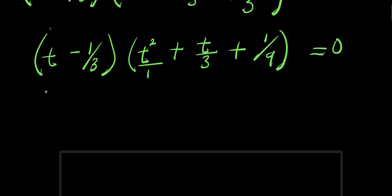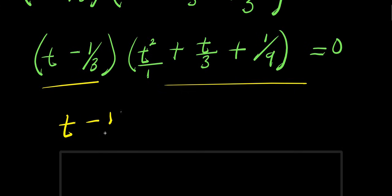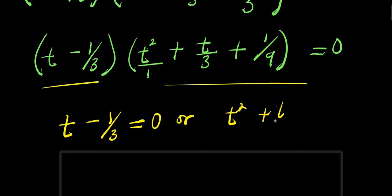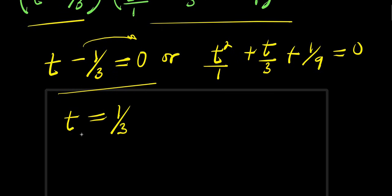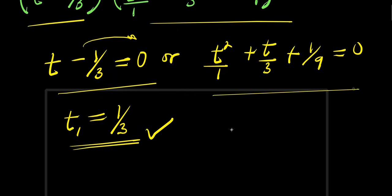So to solve this equation: t minus 1 over 3 equals 0, so t equals 1 over 3. This is the first solution. To solve the other factor here: